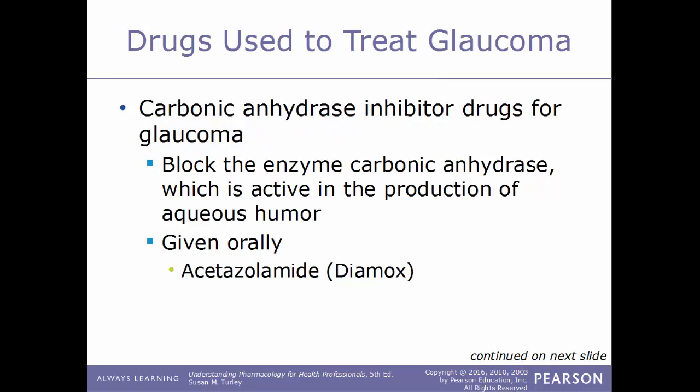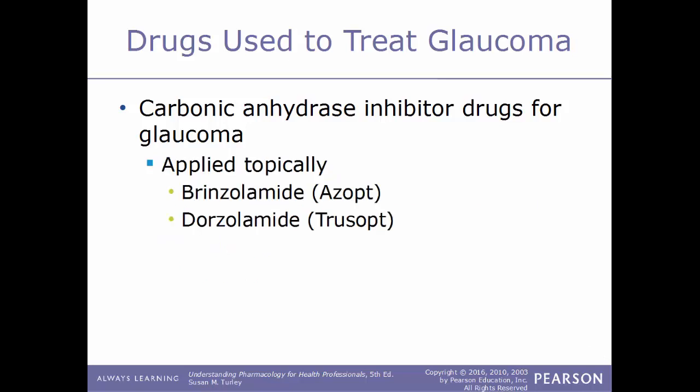Another type of drug used to treat glaucoma are carbonic anhydrase inhibitor drugs. These work by blocking the enzyme carbonic anhydrase, which is active in the production of aqueous humor. This drug can be given in multiple routes of administration. It can be given orally — an example is acetazolamide, sold under the trade name Diamox. It can also be applied topically, such as brinzolamide, sold under the name Azopt, and dorzolamide, sold under the name Trusopt.